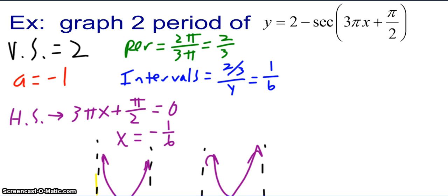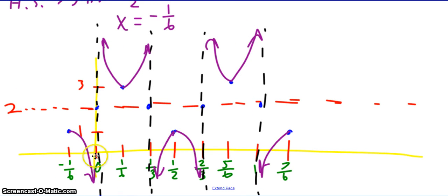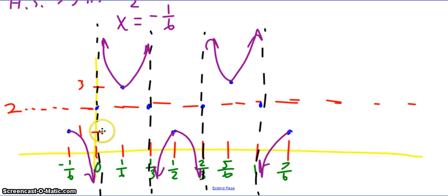Let's look at how we got that. We have a vertical shift of 2 — that's our d value. a is negative 1 because it's a negative secant. The period is 2/3. The intervals are 1/6. The horizontal shift is negative 1/6. So I start at negative 1/6 and then add 1/6 to get all of the x values. I have my vertical shift of positive 2 and an a value of 1, so I'm going to go up 1 and down 1 from there. The negative part of the a value made the cosine graph flip, so you see the blue points here — those would be the points if I was graphing cosine.